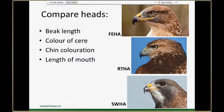Because we're doing nest surveys, the view we often have of birds is just the top parts of their heads and, if we're lucky, their backs as they're sitting in a nest either laying or incubating. So it's really important to have a list of traits to look for when you just see their heads and backs. Things to compare between these three hawk species include beak length, the color of the cere, chin coloration, and the length of that gape.